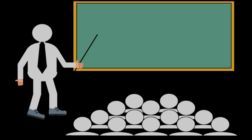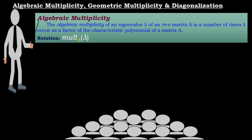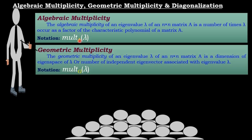Welcome friends. This video is about algebraic multiplicity, geometric multiplicity, and diagonalization of a matrix. The algebraic multiplicity of an eigenvalue lambda of a square matrix A is the number of times lambda occurs as a factor of the characteristic polynomial of matrix A. The notation is MULT_A(lambda).